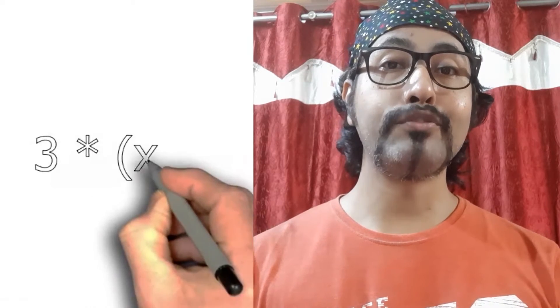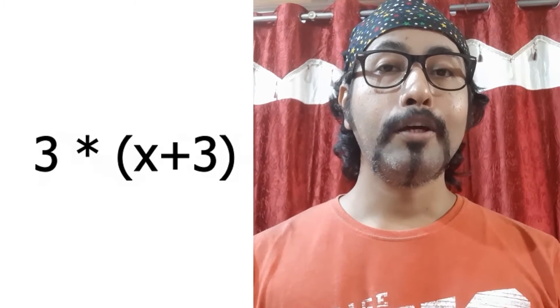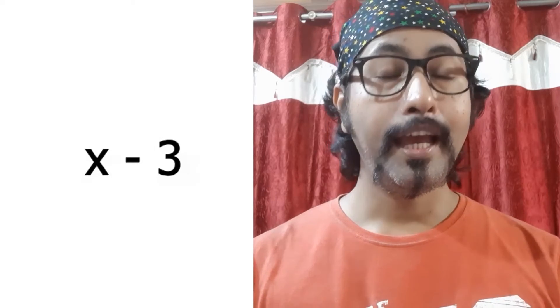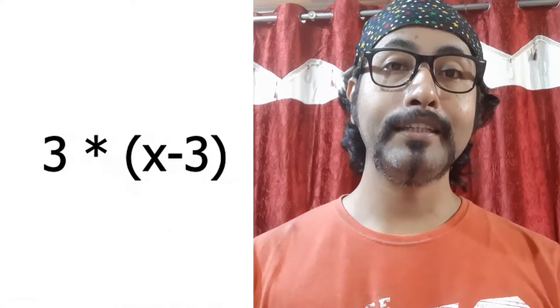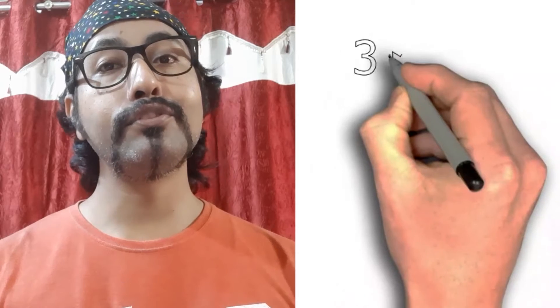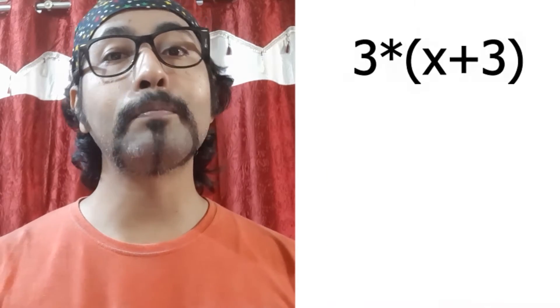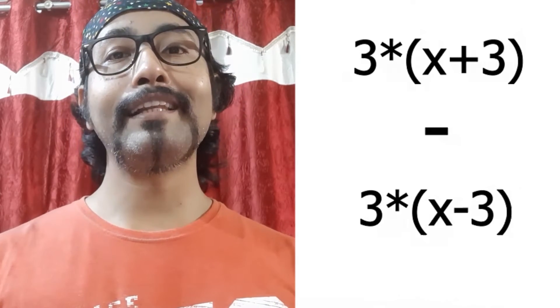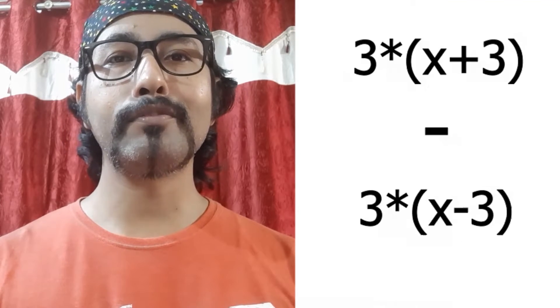Congratulations to all of you who have already solved this problem. If it's not yet solved, don't worry — I'll tell you the way. So let's take x as the variable. Say my age is x at present. After three years it will be x plus 3, and if I multiply it with three it will be 3 into (x + 3). Before three years my age was x minus 3, and multiplied by three that gives 3 into (x − 3). Now I have to subtract the smaller from the bigger: 3(x + 3) minus 3(x − 3).